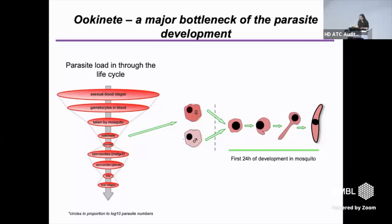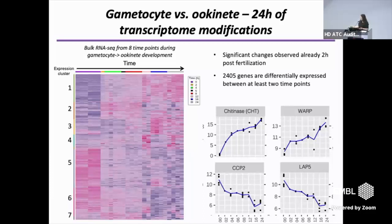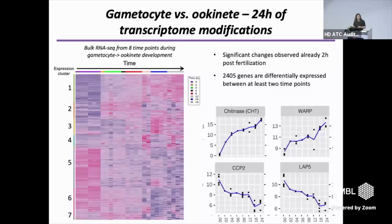We started by generating the gene expression profile from different time points of this transition that were not available at the time. This is a time course of expression of all different genes through ookinete development. There are significant changes already two hours post-fertilization. Looking at model genes, we see a nice gradual transition — gametocyte genes gradually decreasing, ookinete-specific genes like CTRP gradually increasing. In total, pretty much half the parasite genes — over 2,000 — were significantly differentially expressed.